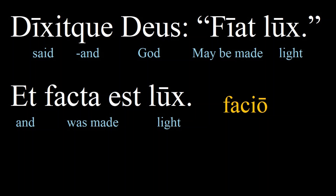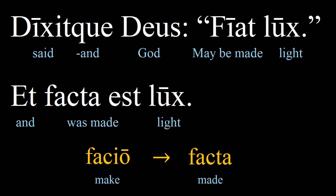So fiat lux means 'may light be made.' We can remember the word lux from the word 'elucidate,' where we make something clear by shining a light on it. The last part of the sentence involves a passive form in the perfect past tense. Facta is the participle of facio — in other words, 'made.' Although facta est looks like the English passive, it actually means 'was made' or 'has been made,' because it's the perfect past tense. The participle facta has to match the subject, even if the subject isn't stated. So this last part means 'and the light was made.'